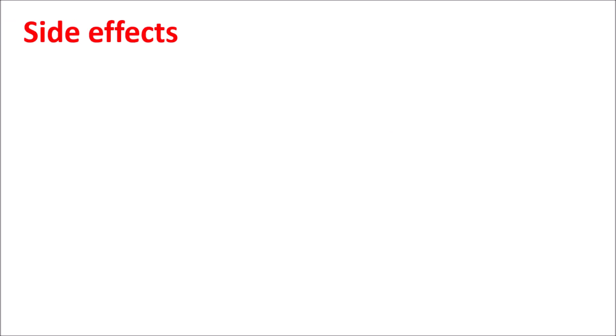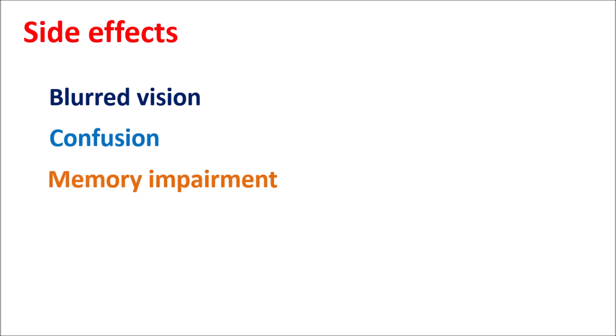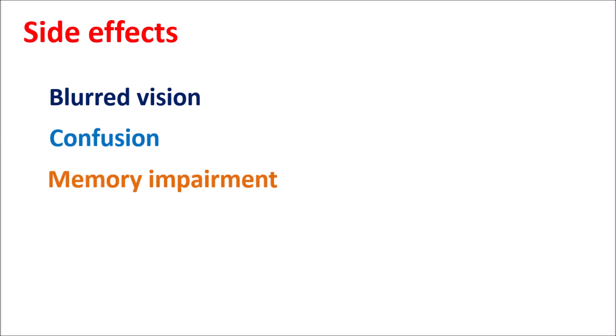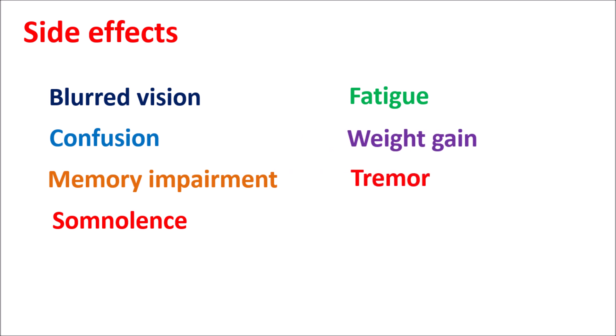Now let us see the side effects of this medication. The important side effects include blurred vision and vision loss, which is variable from patient to patient. It can also produce confusion, memory impairment, somnolence and sleepiness, fatigue and lack of energy, weight gain, and tremors. In some people, this drug can produce bronchitis — bronchial inflammation.